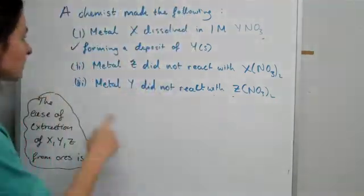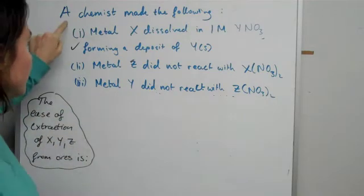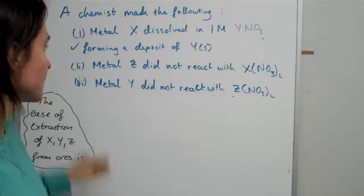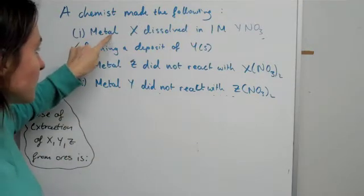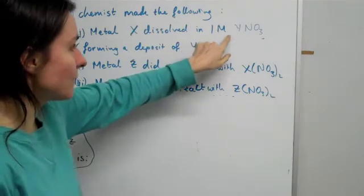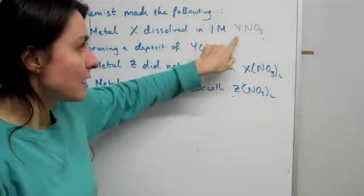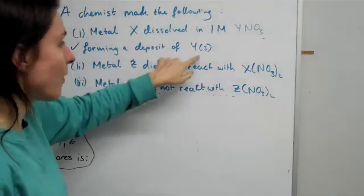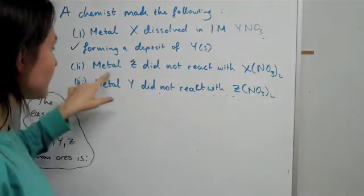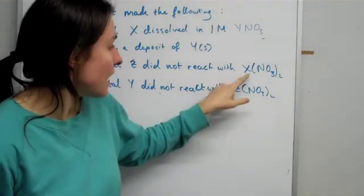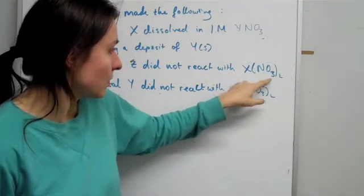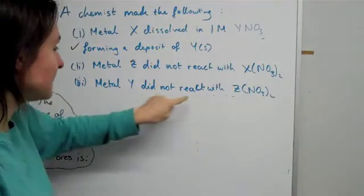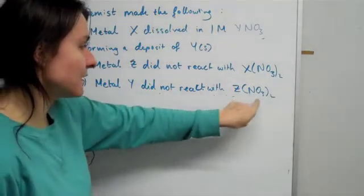Okay, so I've written up a question which says the following. A chemist made the following reactions: Metal X dissolved in 1M YNO3 forming a deposit of Y solid. Metal Z did not react with X(NO3)2. And finally, metal Y did not react with Z(NO3)2.